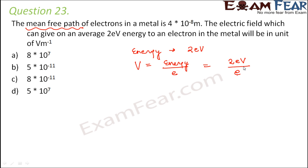It's 1.6 into 10 to the power minus 19 coulombs. So therefore, you are left with 2 volts. So this is basically the potential here. So we have calculated the value of the potential. Now, how is electric field related to potential? Electric field is the potential gradient, that is changing potential with distance. So this would be V by R.